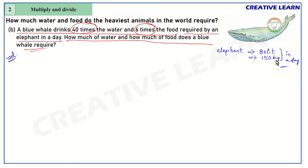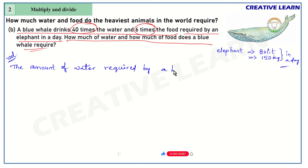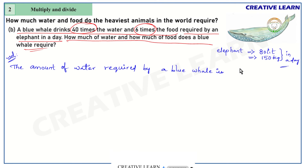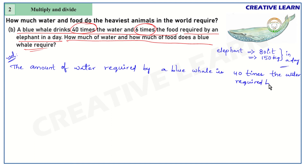The elephant requires 80 liters of water and 150 kg of food in a day. Now, since a blue whale drinks 40 times the water, let's find the amount of water required by the blue whale. That is 40 times the water required by an elephant — so 40 into 80 liters.